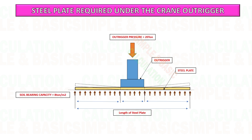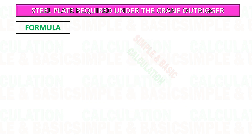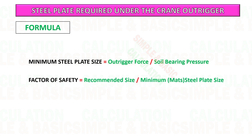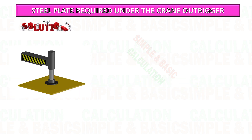By providing steel plate or mats under the crane outrigger, it creates a larger surface area that will help to reduce the pressure on the ground. This is the formula we will use to calculate the minimum steel plate size required and the factor of safety.